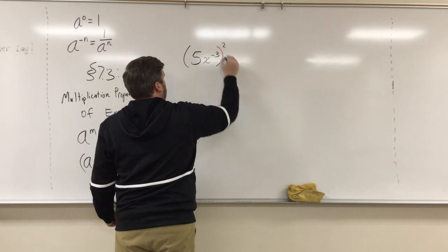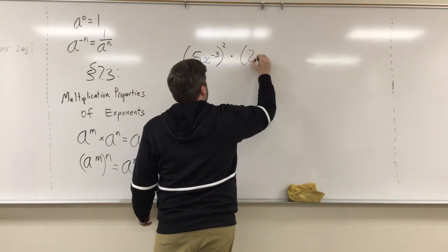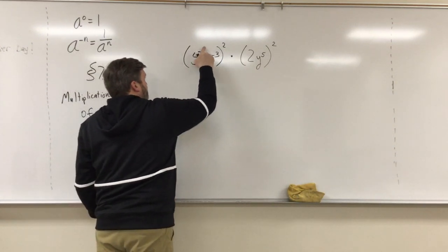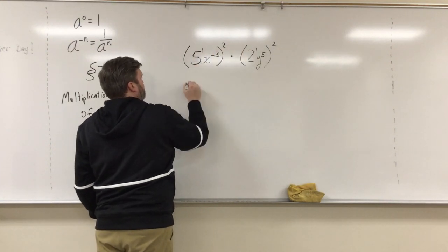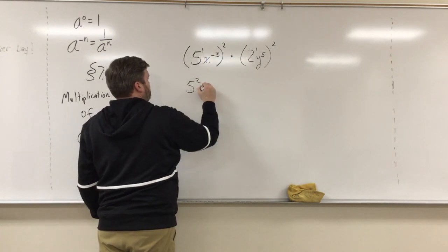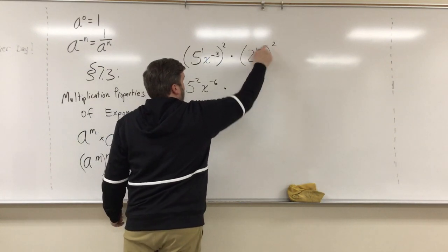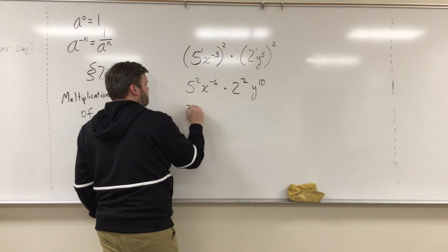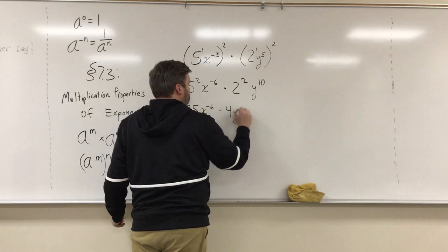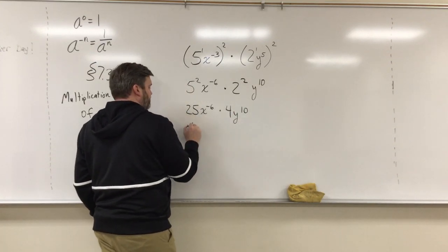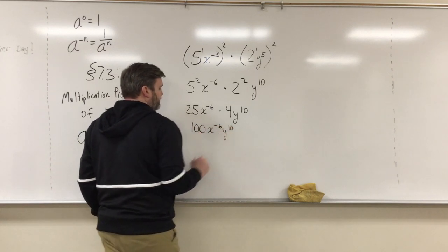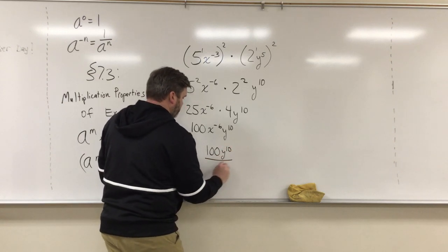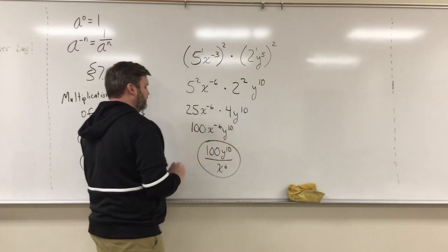Let's do (5x to the negative third) all that squared, times (2y to the fifth) squared. Remember these have exponents of ones technically, so one times two is two for the 5 and the 2; negative three times two is negative six; one times two is two; five times two is ten. Go ahead and multiply: that gives 25x to the negative six and 4y to the 10th. Multiply the numbers: 100x to the negative six y to the 10th. Since x has a negative exponent, send it downstairs. Final answer: 100y to the 10th over x to the 6th.